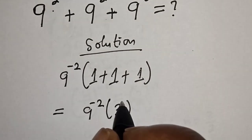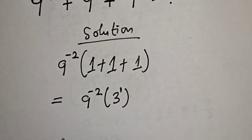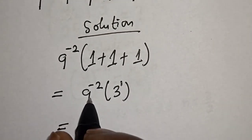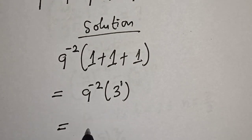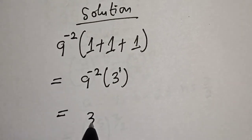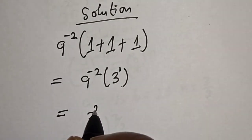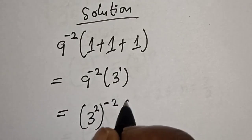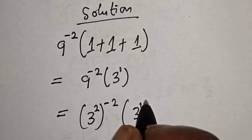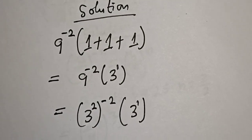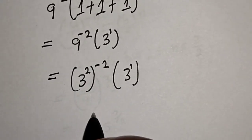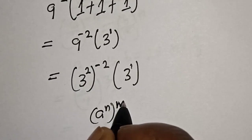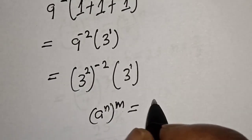This is equal to 9 raised to power minus 2, which can be written as 3 squared to the power of minus 2, multiplied by 3 raised to power 1. Now remember this rule: if you have a raised to power n, to the power of m, this is equal to a raised to power n times m.